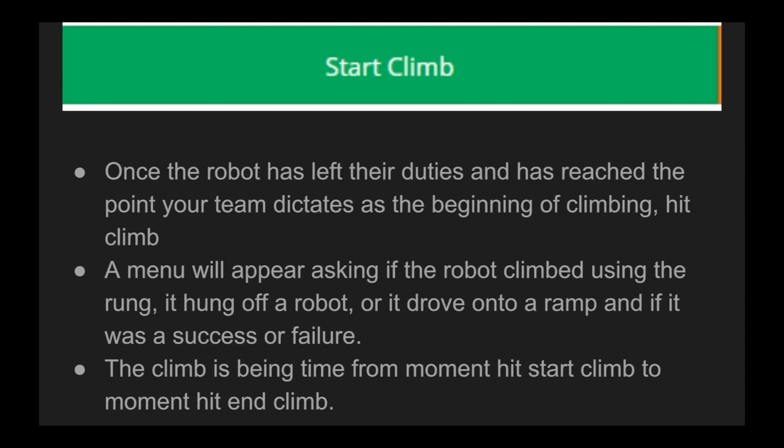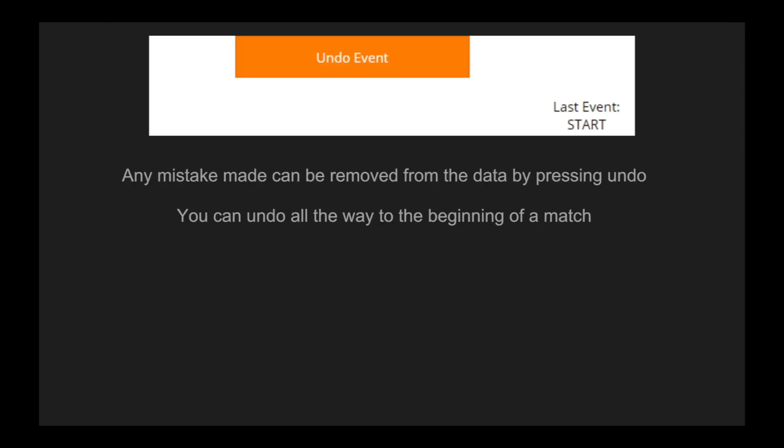Once a robot has left their duties and reached the point your team dictates as the beginning of climbing, hit start climb. A menu will appear asking if the robot climbed using a rung, hung off a robot, or drove onto a ramp, and whether it was a failure or a success. Any mistakes made can be removed from the data simply by pressing undo event.